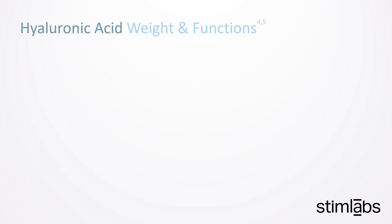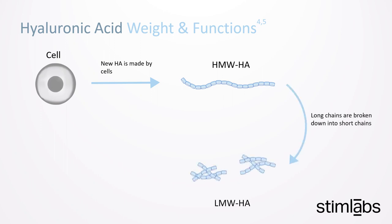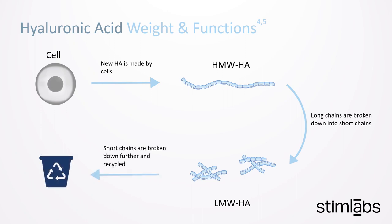New HA is made by cells at the cell surface. As HA is turned over, enzymes break down long HA chains, which we call high molecular weight HA, into shorter chains, creating a lot of small molecules of HA, which are called low molecular weight HA. Eventually, all of these small chains are going to be broken down and recycled by the body.